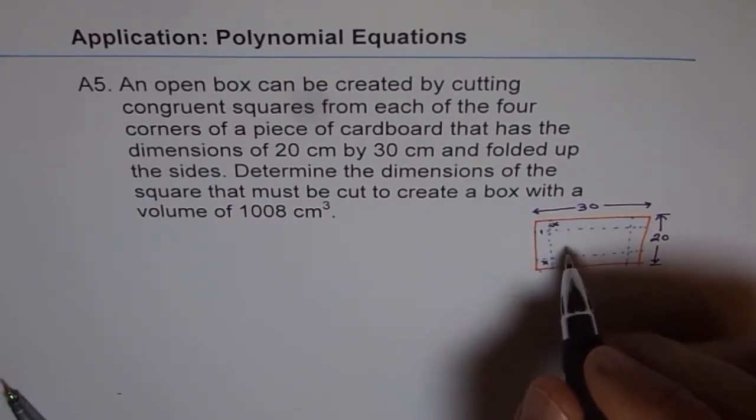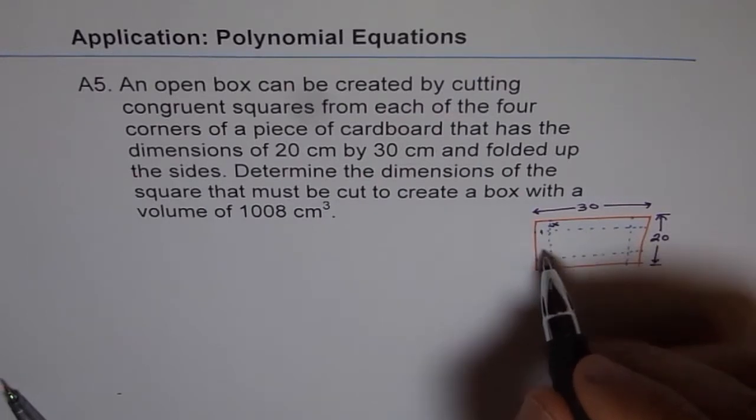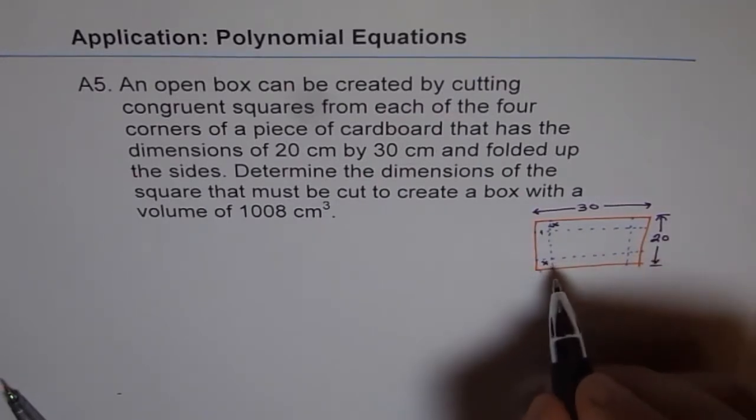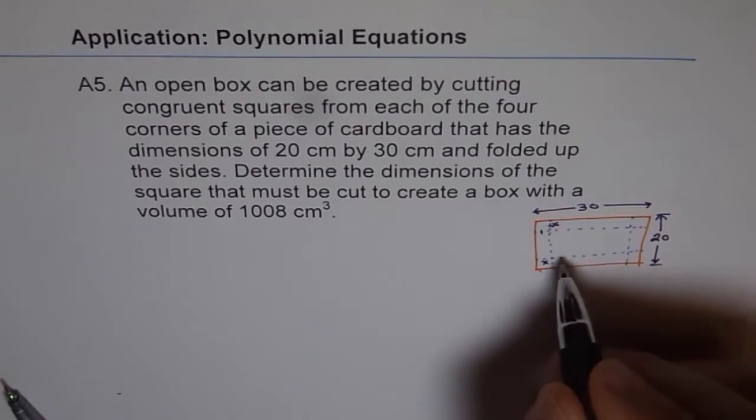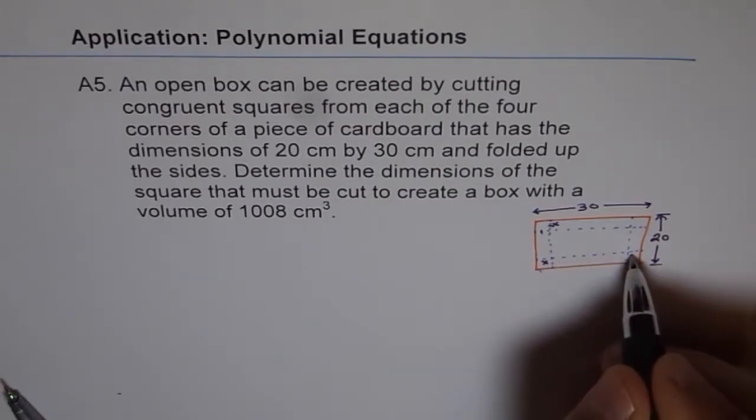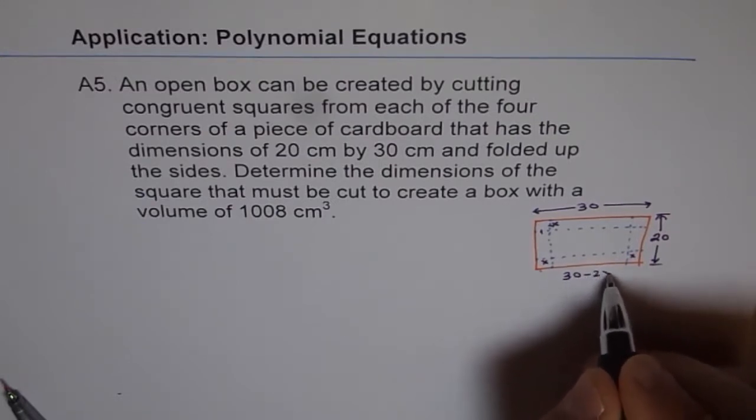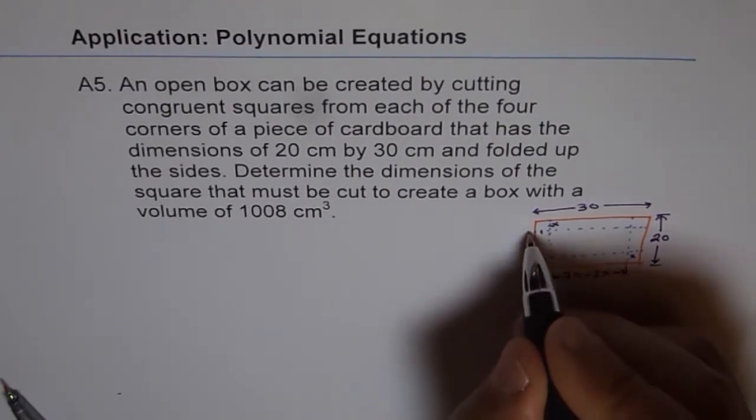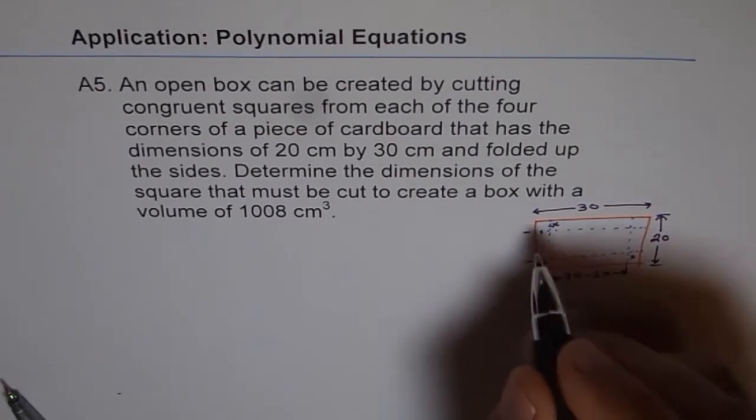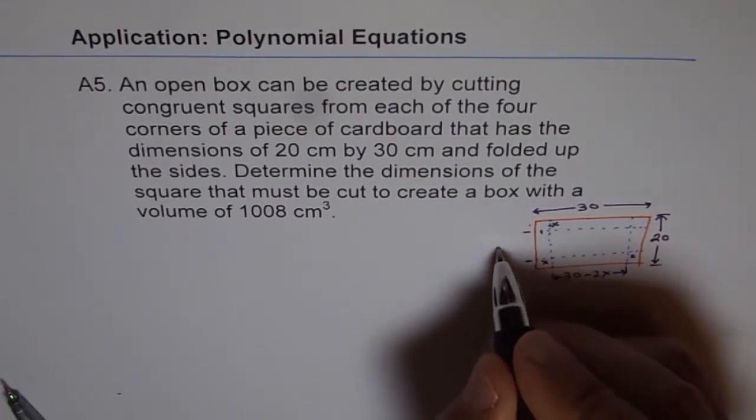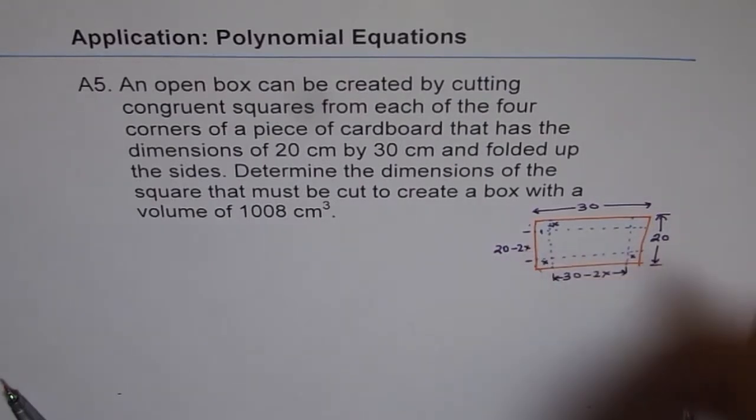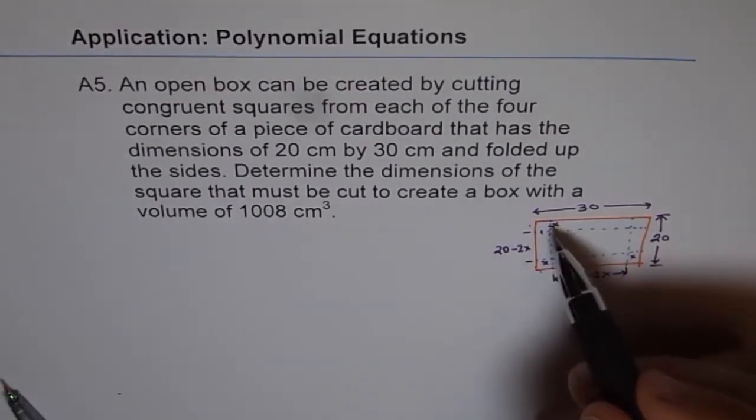So when you fold it up, then you get a box whose dimensions are this inside dimension. Inside dimension will be 30 minus x and minus x, so you get 30 minus 2x. So that is the dimension of the box, that is the base length. And the width will be 20 minus x and minus x, which is 20 minus 2x. And when you fold it upwards, then x becomes the height of the box. Correct.